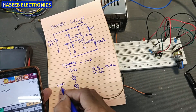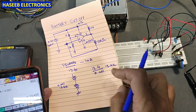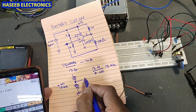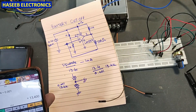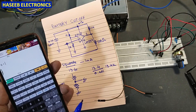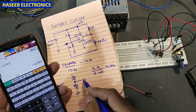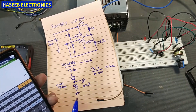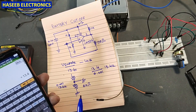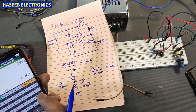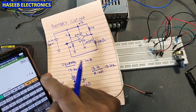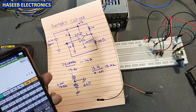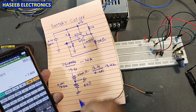We need 6V at the midpoint. Using V/I: 6V ÷ 0.001A = 6kΩ for the lower resistor. The remaining voltage is 13.4V − 6V = 7.4V. Dividing by 0.001A gives 7400Ω (7.4kΩ) for the upper resistor. So we need two resistors: 7.4kΩ and 6kΩ.